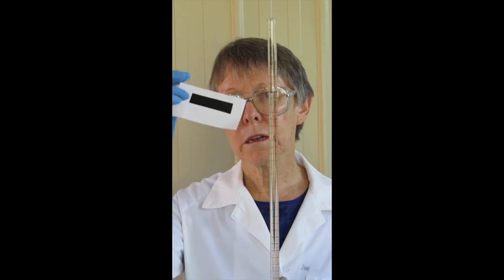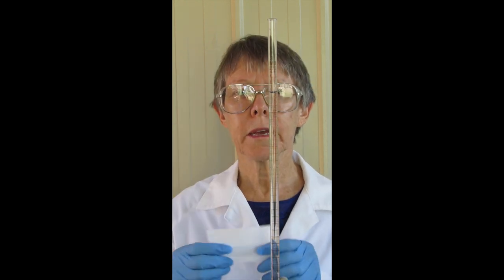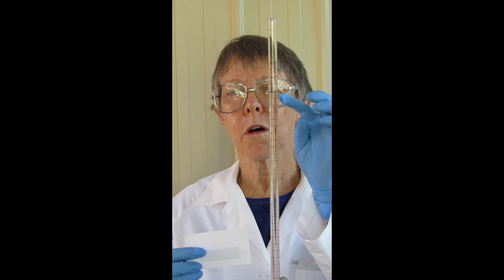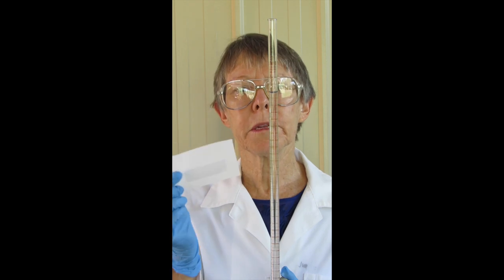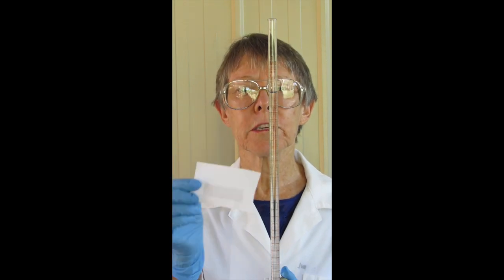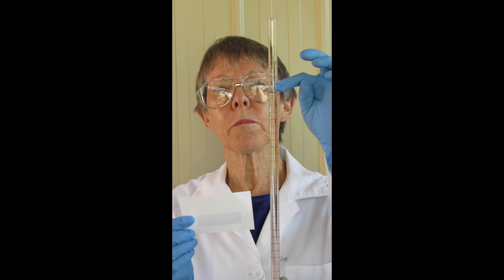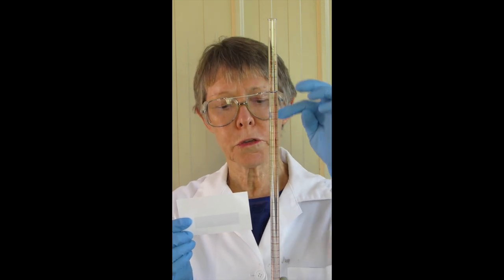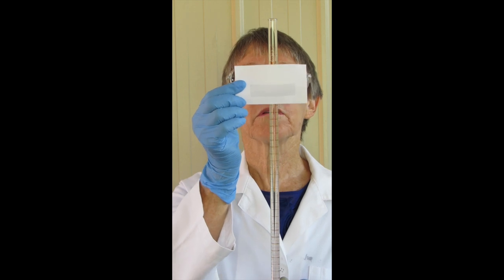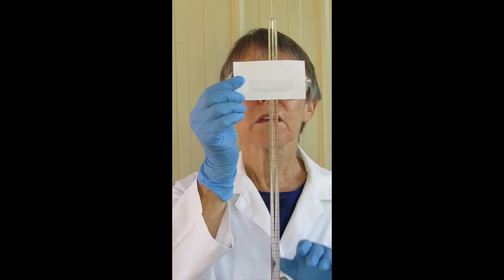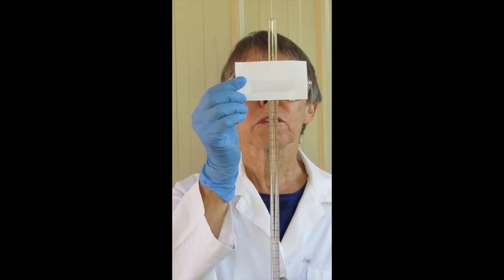The burette reading card helps get a better view of the bottom of the meniscus. We're looking for the point where the very bottom of the meniscus curve is against the graduations. Remember we read from the top down, so it goes 2 down to 50. Hold this up and read your burette to two decimal places.